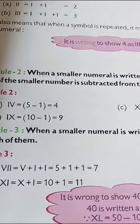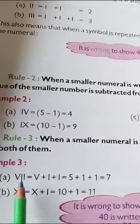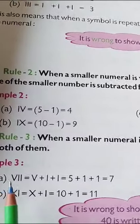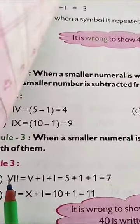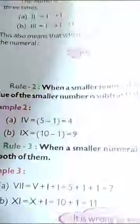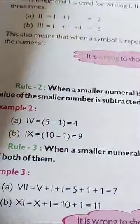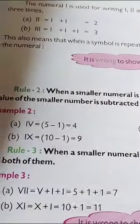So when a smaller number is written after a greater number, V represents 5 and after 5, it is written I. It means a smaller number is written after a greater number. So when a smaller number is written after a greater number, we add.